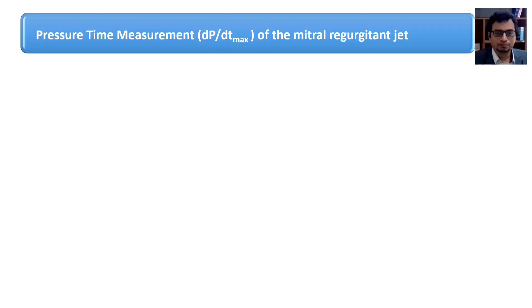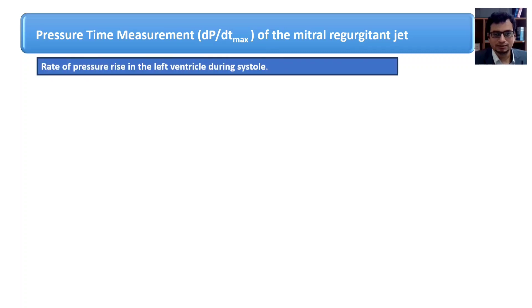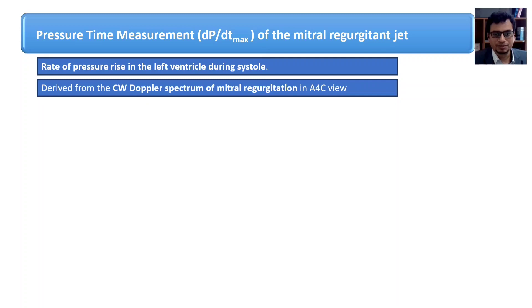A very good but underutilized measure of LV systolic function is DP over DT max which is the maximal rate of rise of LV systolic pressure which is a parameter of myocardial isovolumetric contraction. In short, the faster the left ventricle is able to build up the pressure the better its function is.